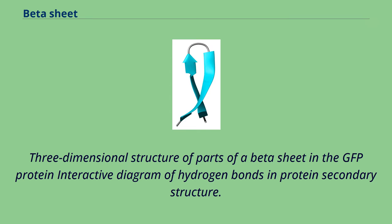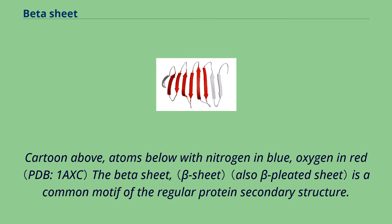Parts of a beta sheet in the GFP protein, interactive diagram of hydrogen bonds in protein secondary structure. Cartoon above, atoms below with nitrogen in blue, oxygen in red. The beta sheet is a common motif of regular protein secondary structure.